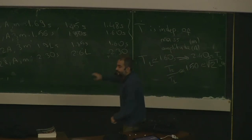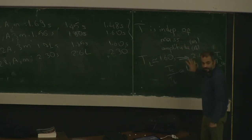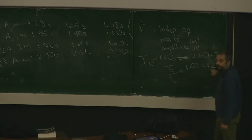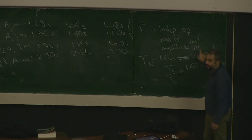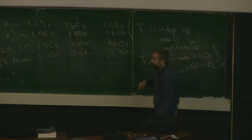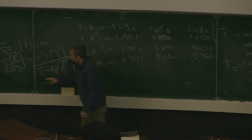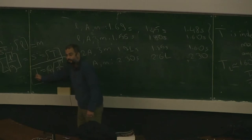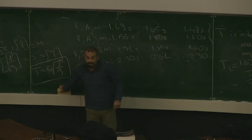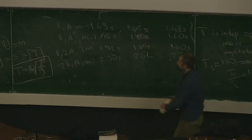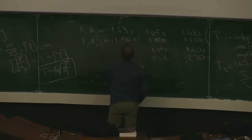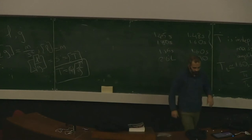Now let's do some mathematics. We have experimental observations. We experimentally observed that the period is independent of the mass and the amplitude, and seemed to be proportional to the square root of the length. Using the fact that the period doesn't depend on the amplitude, approximately at least, we could show that the period has to be proportional to square root of L over g. Now we can have a dependence on the amplitude — the constant C might have some dependence on theta zero, the amplitude.